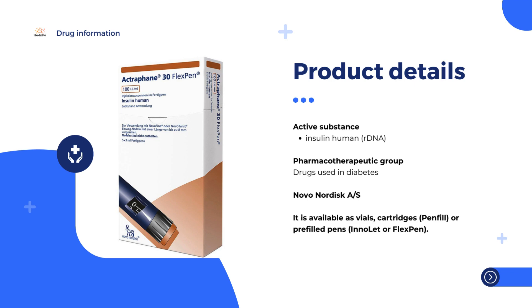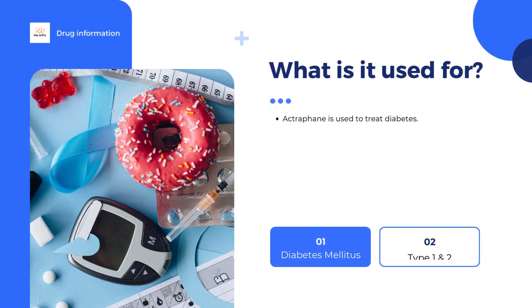Actrophane is given by injection under the skin in the thigh, the abdominal wall at the front of the waist, the gluteal region (buttocks), or the deltoid region (shoulder). The injection site should be changed for each injection.